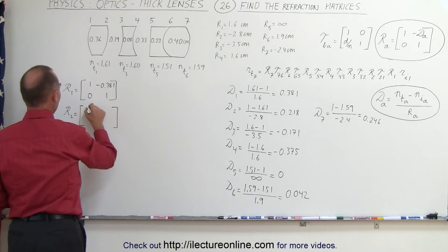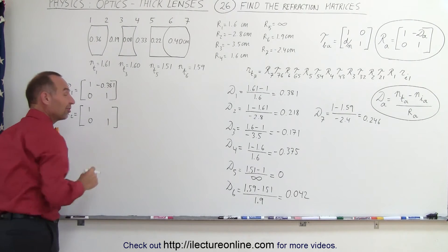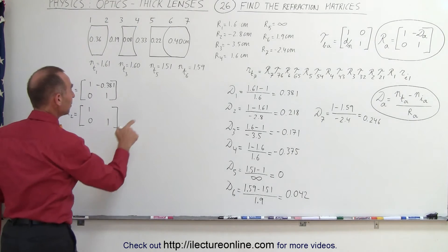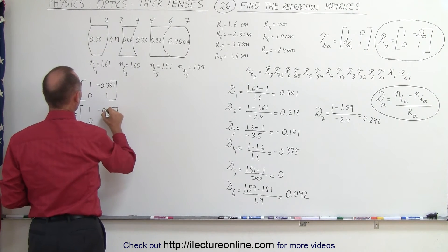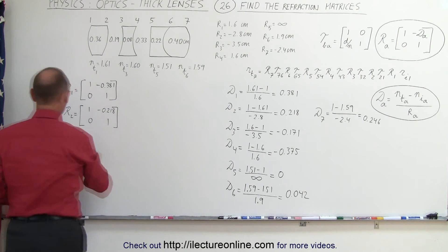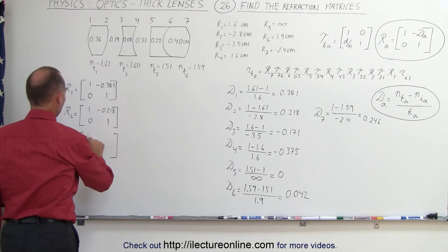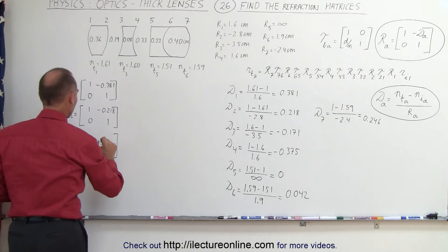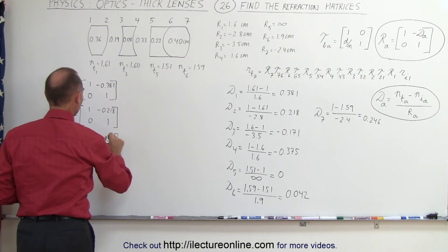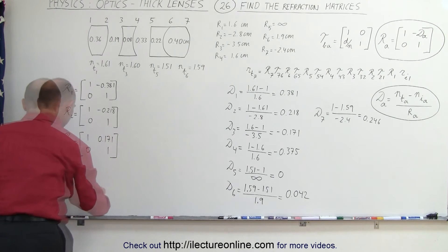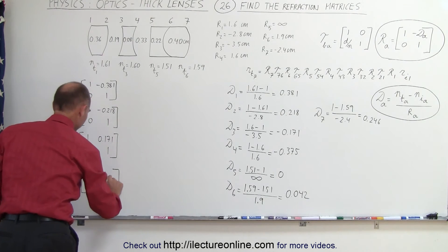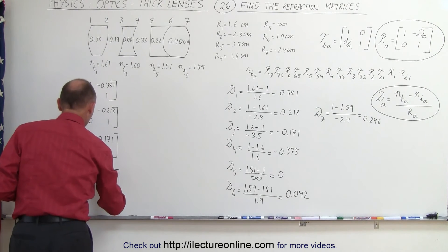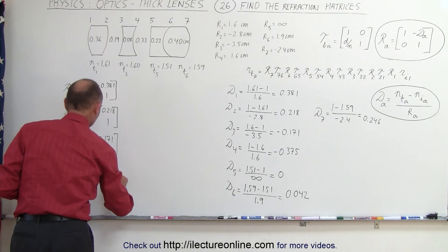R2. And you begin to see the pattern. Actually, when you work through one of these examples, you get really proficient at just plugging in the numbers. So that would be the negative of that number, minus 0.218. So here again, 1, 1, 0, and the negative of that number, that would be positive 0.171. The negative, 1's across diagonal, 0 there, and we end up with a negative of that number, that's positive 0.375.